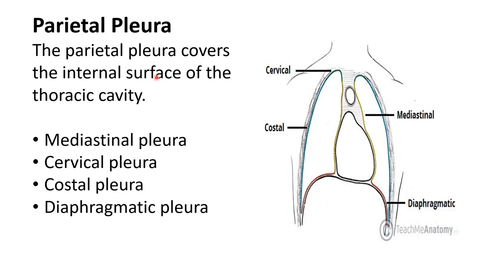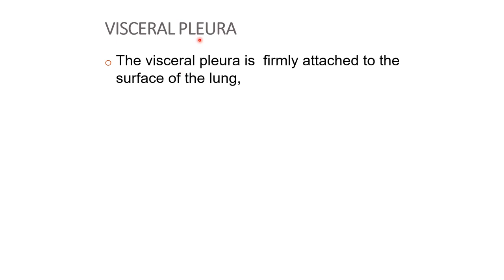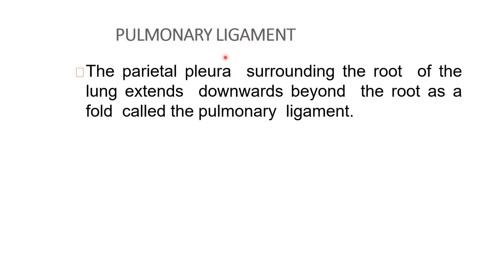The parietal pleura covers the internal surface of the thoracic cavity and has four parts: mediastinal pleura, cervical pleura, costal pleura, and diaphragmatic pleura. Explain about each of these parts, using the video available in this channel. Next, write about the visceral pleura — the key point is that it is attached to the surface of the lung. Also write about the pulmonary ligament: the parietal pleura surrounding the root of the lung extends downwards beyond the root as a fold called the pulmonary ligament.